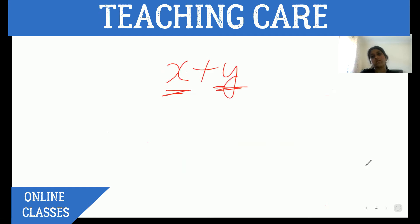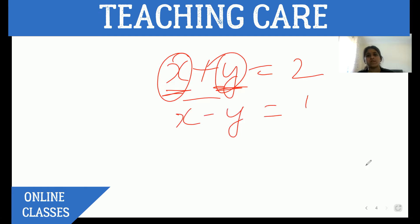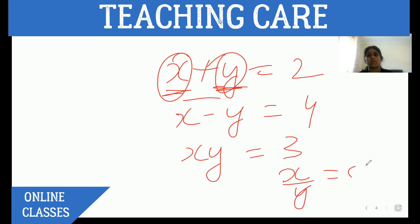We have two variables and we need some relation between them. The first equation tells us that these two variables on addition give 2. To solve it without knowing the value of either variable, we need one more relation — like x minus y equals 4, or x times y equals 3, or x divided by y equals 5. At least two relations are required to solve it.